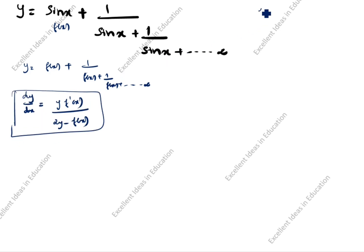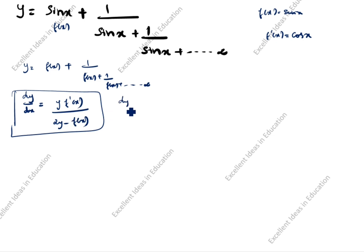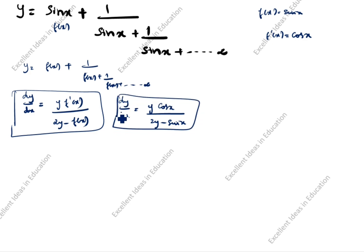Here f(x) = sin x and f'(x) = cos x. Substituting into the formula: dy/dx = y·cos x divided by (2y − sin x). This is the answer using the formula method.